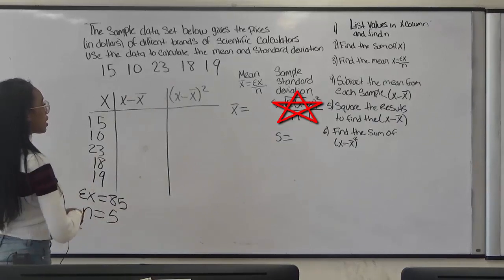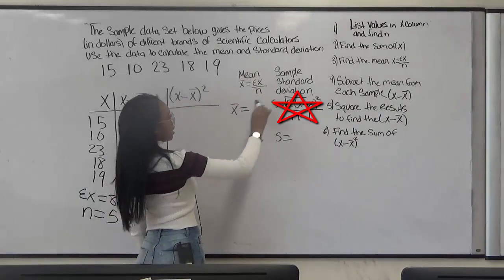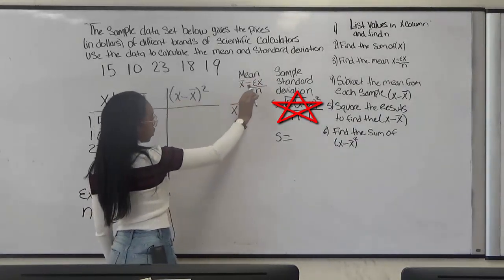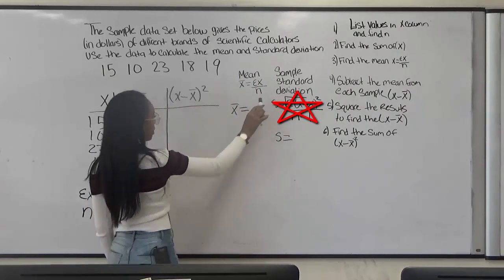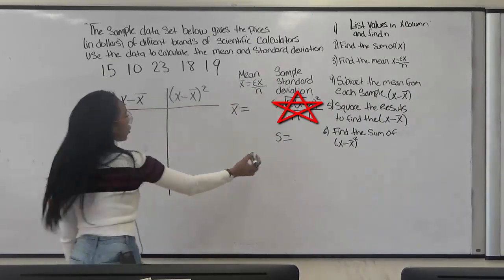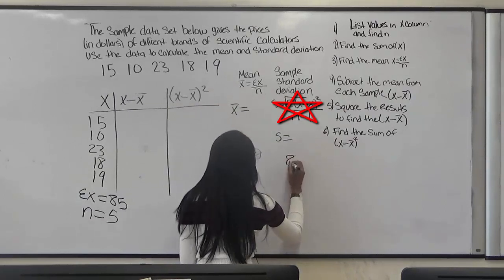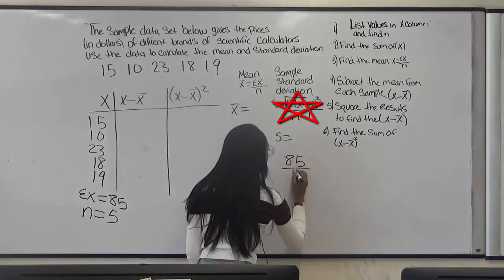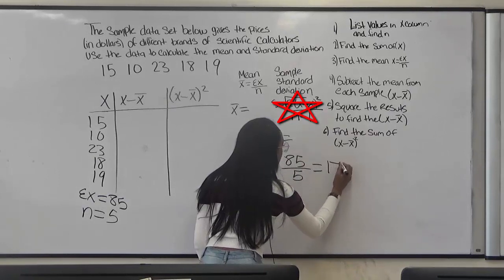So the next thing is finding the mean. Here's the formula to finding the mean: x bar equals the sum of x divided by n. So I'll write it here. 85 divided by 5 equals 17.